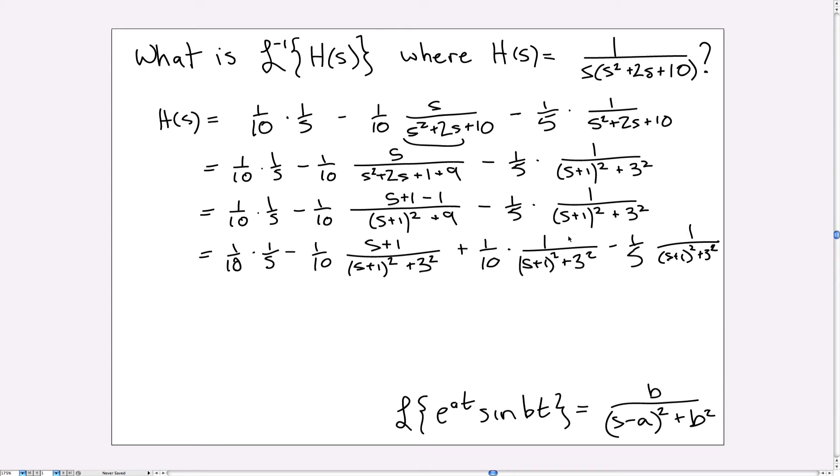But we have this extra stuff over here, which is close to, but not exactly, the transform of e to the something t, sine something t. So first of all, these are exactly the same term, and I have plus 1 tenth minus 1 fifth. So I can just add those together, and I will get minus 1 tenth overall.